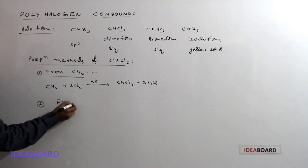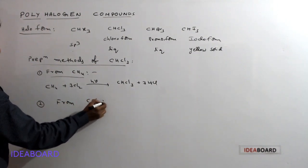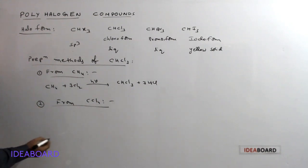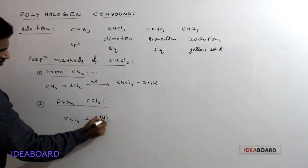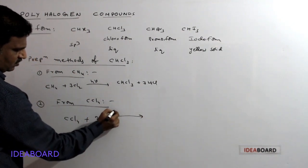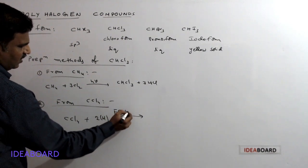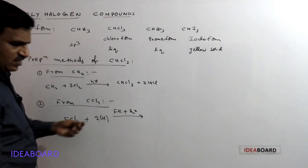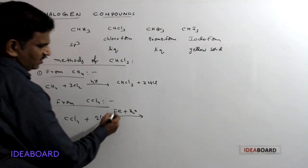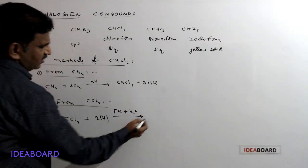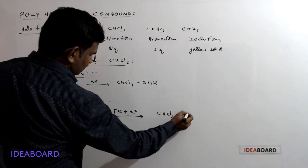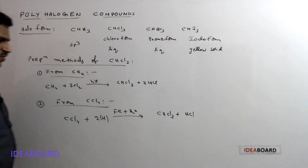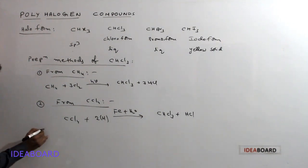The second method is from CCl4 (carbon tetrachloride) or pyrene. CCl4 reacts with hydrogen in a reduction process. The reduction reagent is iron filings and water — very small pieces of iron taken along with steam — and this reaction gives CHCl3 plus HCl.